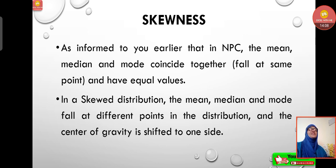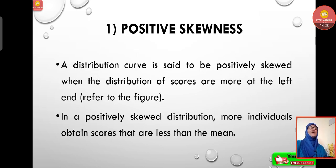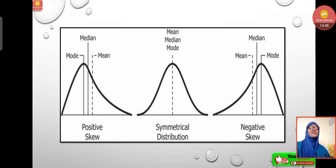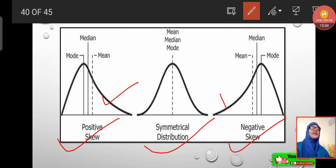Now, skewness: in a normal probability curve, the mean, median, and mode coincide at the same point and have equal values. In a skewed distribution, the mean, median, and mode fall at different points, and the center of gravity is shifted to one side. A distribution curve is positively skewed when the scores are concentrated more at the left. In a positively skewed distribution, more individuals obtain scores that are less than the mean. Negatively skewed is the opposite — scores fall more towards the right.